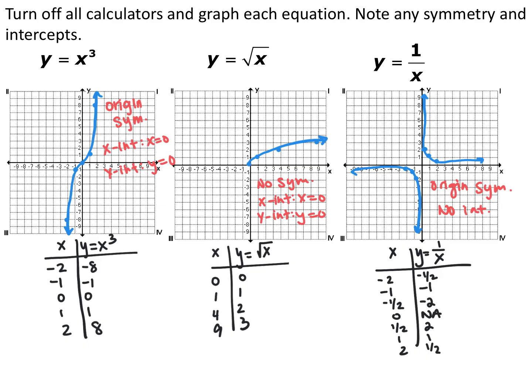The square root function has no symmetry, and both intercepts are 0. For y equals 1 over x, I used x values of −2, −1, −½, ½, 1, 2. Plugging in 0 is undefined — division by zero — so nothing exists there. As x gets larger, y gets smaller; as x approaches 0, y gets very large. The graph has origin symmetry, and there are no intercepts since the curve never crosses either axis.